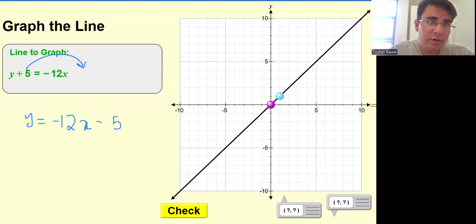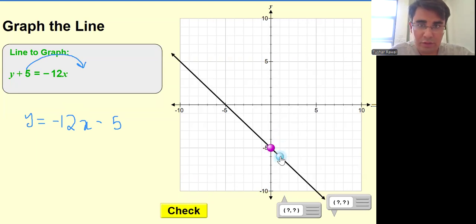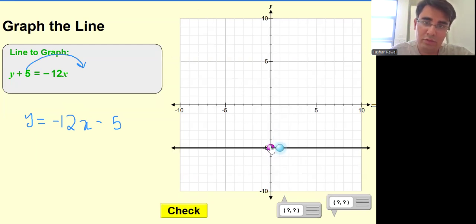My y-intercept becomes -5, so this is -5. The slope is -12/1. How will I plot this? -12 is too much down, so let me just go up 12 steps: 1, 2, 3, 4, 5, 6, 7, 8, 9, 10, 11, 12. That's 12 steps up.